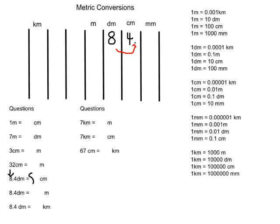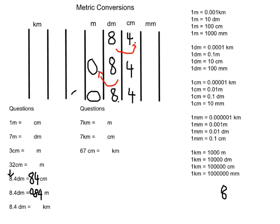Using the same 8.4 decimeters, we can convert to meters: the decimal point moves one place to the left, we add a zero, and our answer is 0.84 meters. Converting all the way to kilometers, we move the decimal point four places to the left, filling in all the intermediate columns with zeros, giving us 0.00084 kilometers.